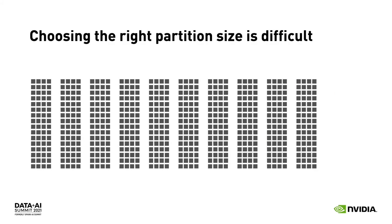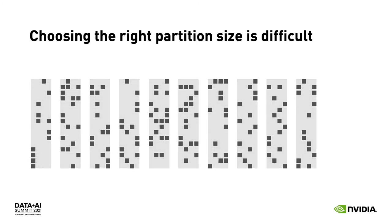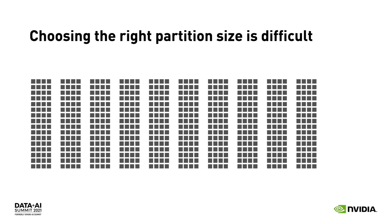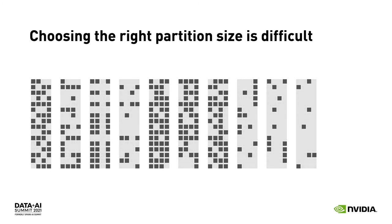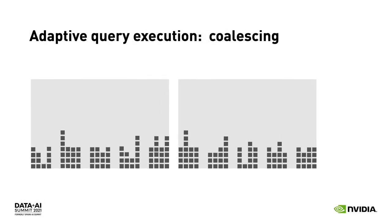Choosing the right partition size for optimal execution is difficult, and the right partition size at one stage of your job may not be the right size later. If we have a filter operation running on a partitioned data frame, we might eliminate nearly all the elements — but we might also see non-uniform filtering that causes some partitions to have far more elements than others, making runtime dominated by the largest partitions. Adaptive query execution can help by coalescing partitions used for shuffling — recognizing sparse or very small partitions and combining them into relatively fewer, larger partitions.